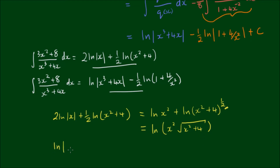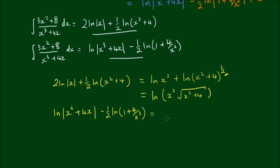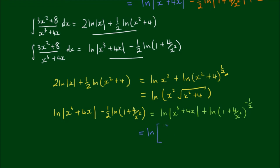Now for the second result: log(x³ + 4x) − ½·log(1 + 4/x²). I can write the second term as log((1 + 4/x²)^(−1/2)), and combining these gives log of (x³ + 4x) divided by √(1 + 4/x²). Let me write this in blue to be clearer. So we have log[(x³ + 4x) / √(1 + 4/x²)].